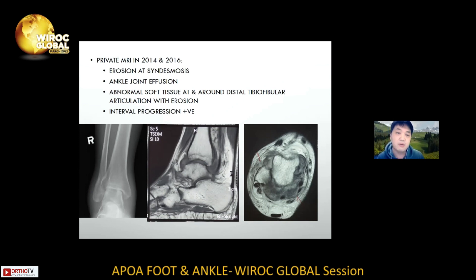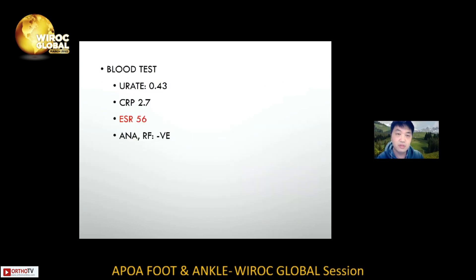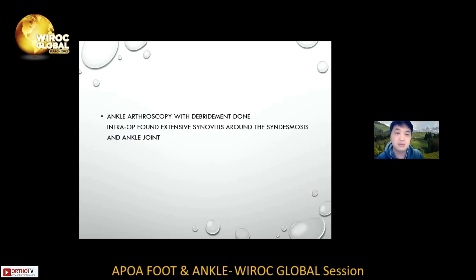There was abnormal soft tissue around the distal tibio-fibular articulation with erosion, and there was progression compared to the MRI done two years ago. We did blood tests, which essentially showed elevated ESR; other blood tests were normal. We then performed another ankle arthroscopy with debridement.